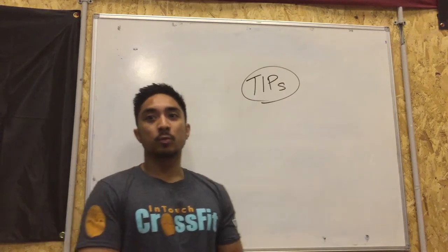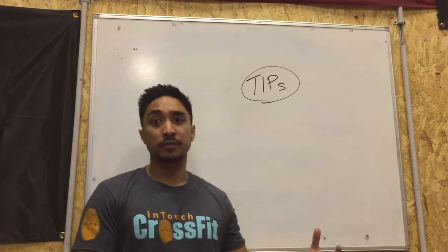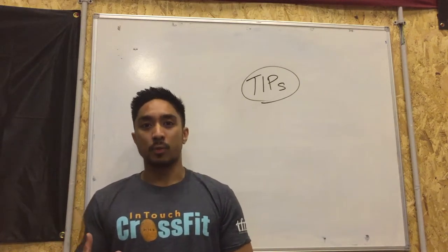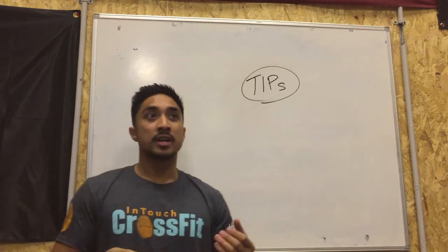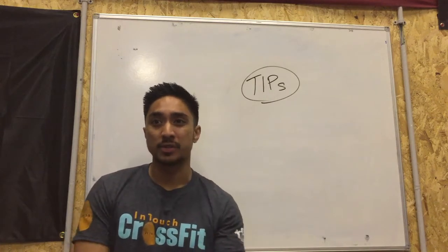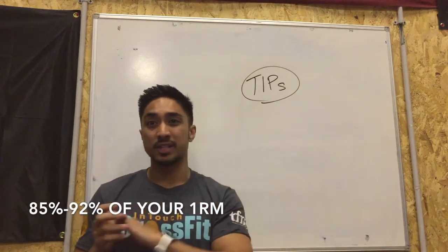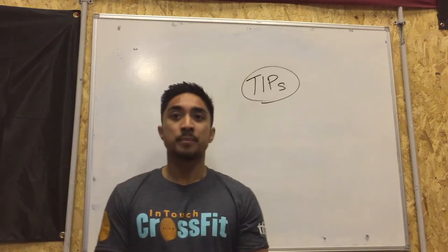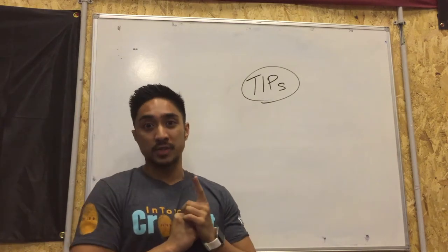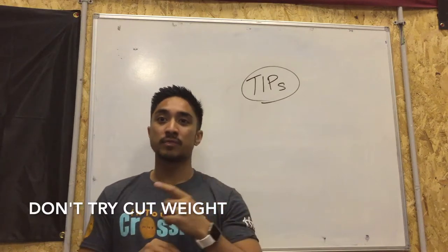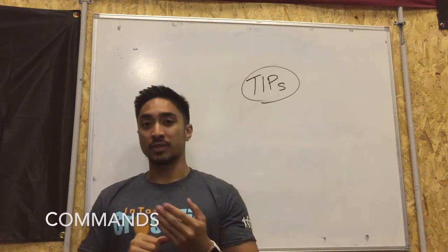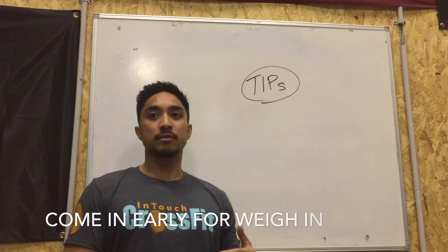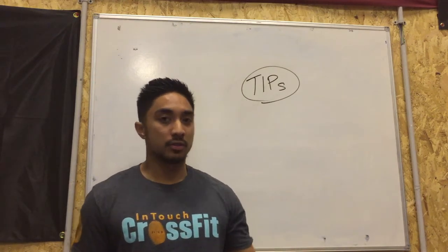Some tips: when you come in, you want a rough idea of what you want to lift. For openers, there's an unwritten rule that you want to open with no more than your three-rep max, or anything you can hit for a heavy triple on two hours of sleep — usually around 85% to 92% of your max. Don't go hitting 92% for your opener. If it's your first competition, do not cut weight. Don't forget the commands for squat and the other lifts. Come in early for the weigh-in so you can eat and digest after weighing in.